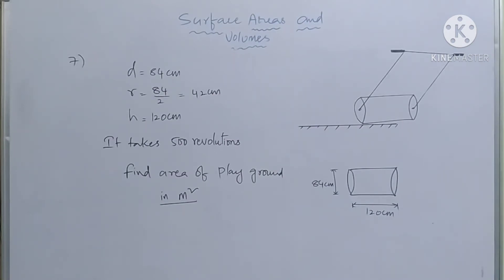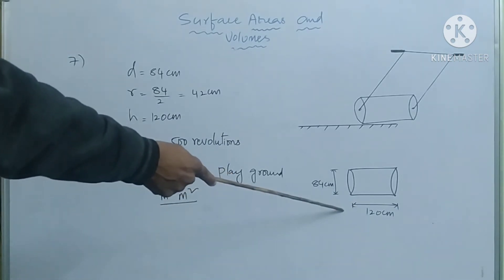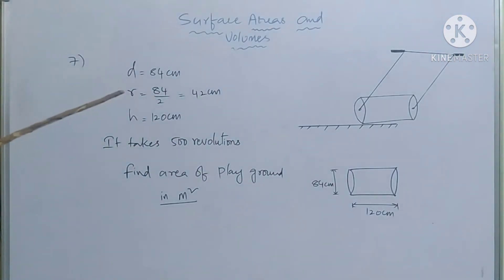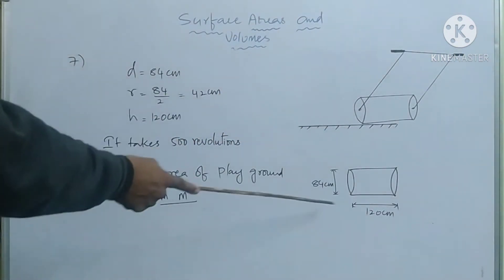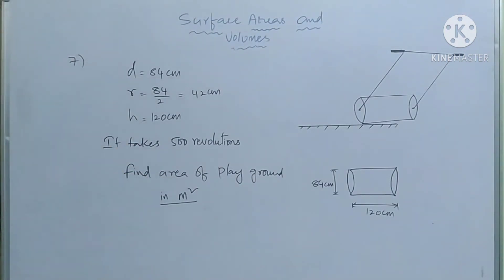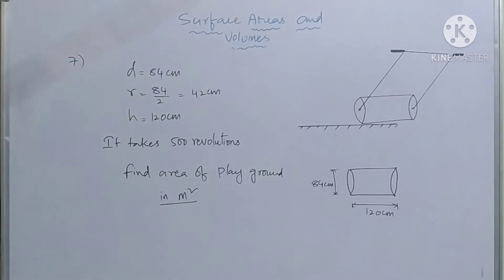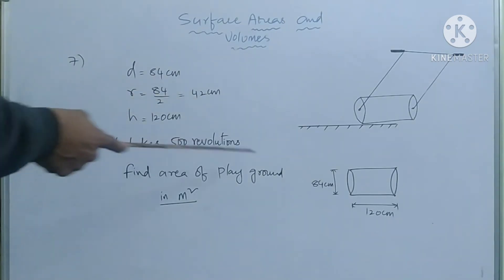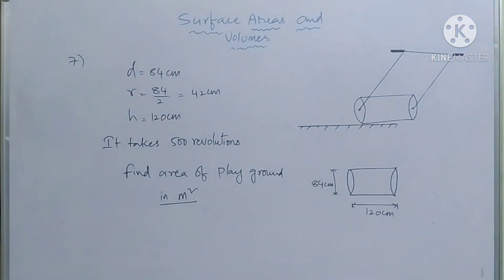This is our eighth question. The diameter of a roller is 84 centimeters and its length is 120 centimeters. It takes 500 revolutions to roll once over the playground. So diameter is 84 centimeters, height is 120 centimeters, and it takes 500 revolutions to complete the total ground. Find the area of the playground in meter square. Diameter 84 cm means radius equals 84 by 2, which is 42 centimeters.